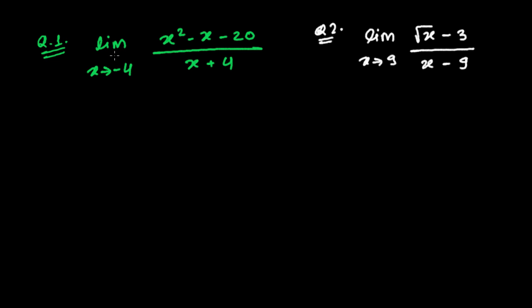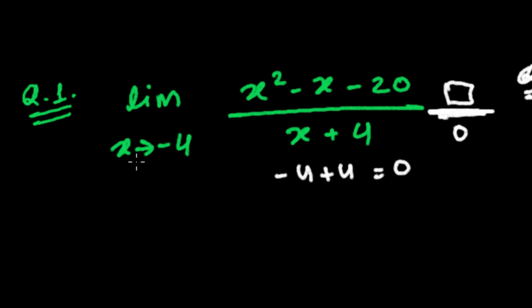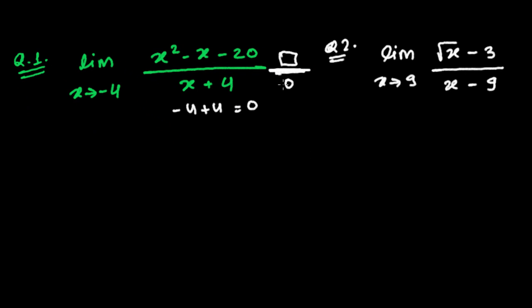We have two questions. The first is: limit as x tends to negative 4 of (x² - x - 20) divided by (x + 4). If I insert x = -4 directly, I get -4 + 4 = 0 in the denominator. That gives an indeterminate, undefined form — we are not allowed to have zero in the denominator in the real number system.